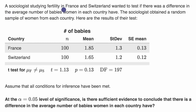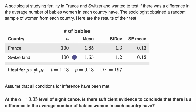A sociologist studying fertility in France and Switzerland wanted to test if there was a difference in the average number of babies women in each country have. The sociologist obtained a random sample of women from each country. Here are the results of their test. You can see a 100-person sample from France and a 100-person sample from Switzerland.